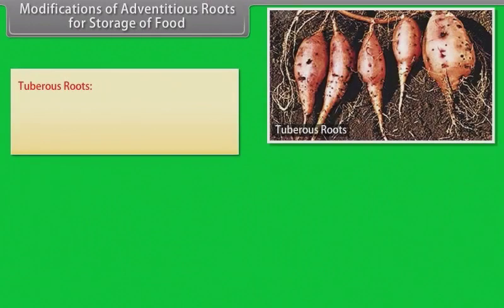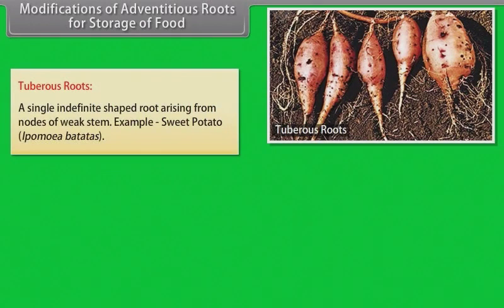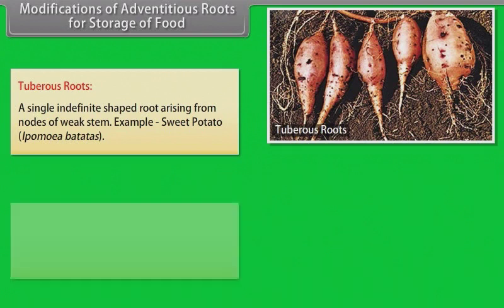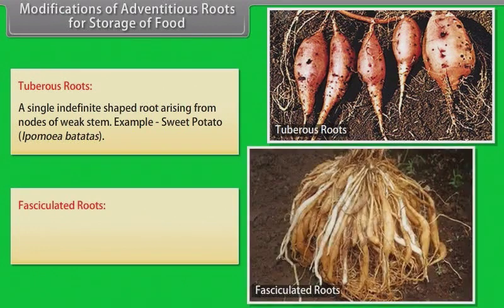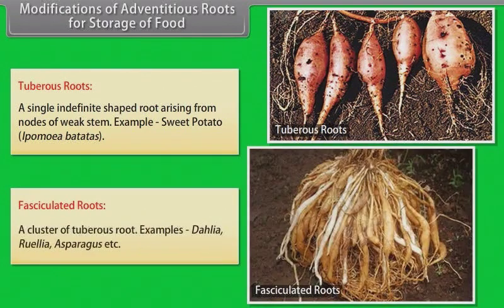Tuberous roots — a single indefinite-shaped root arising from nodes of a weak stem. Example: sweet potato. Fasciculated roots — a cluster of tuberous roots. Examples: dahlia, Ruellia, asparagus, etc.